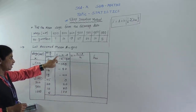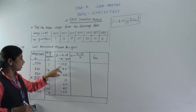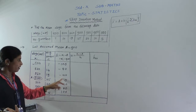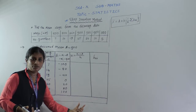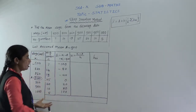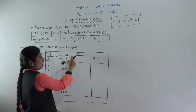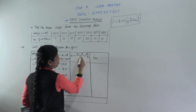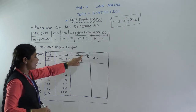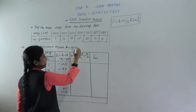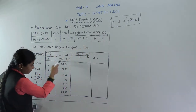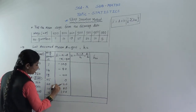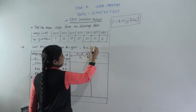Now to reduce these di values further, we need to find ui = di divided by h. We need to find h from the di values — the common factor that divides all the di values. Of course, that number is 20. So h = 20.